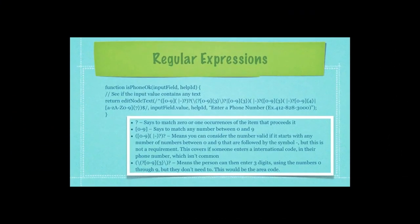Here we're checking to see if the phone number is okay. The question mark says to match a zero or one occurrences of the item that precedes it. And that item is expected to be either a digit between zero and nine. Then the next code means you can consider the number valid if it starts with any number of numbers between zero and nine that are followed by the dash symbol. But this is not a requirement.